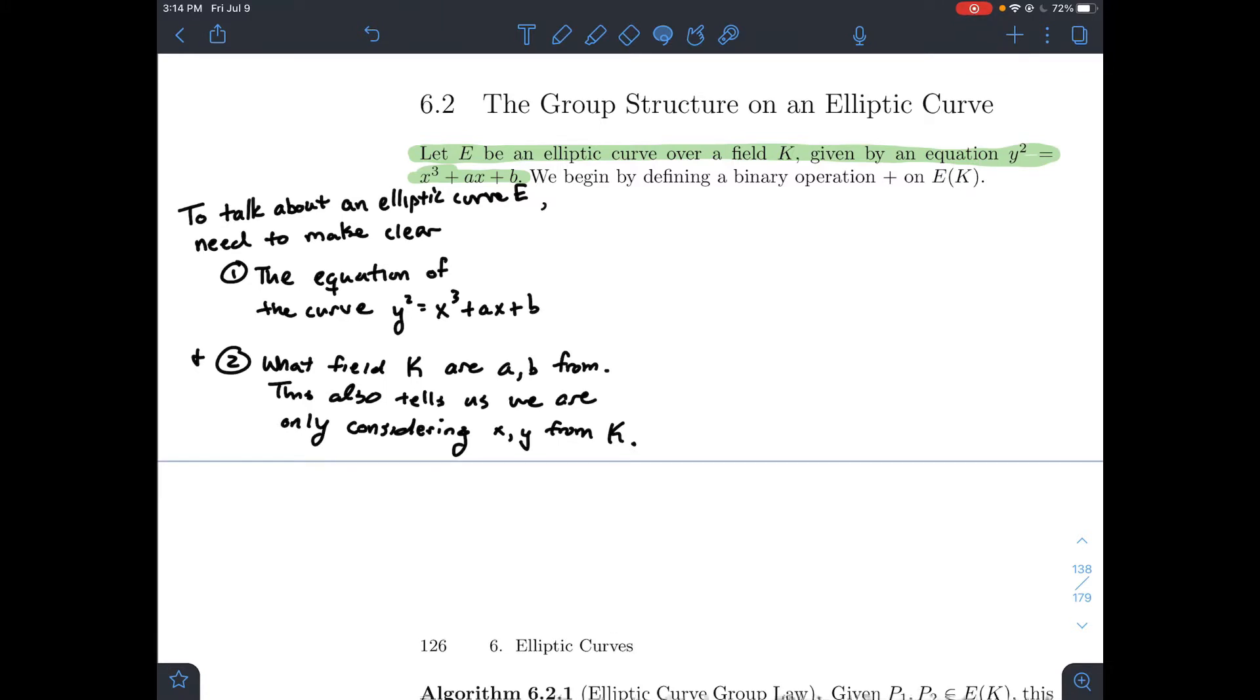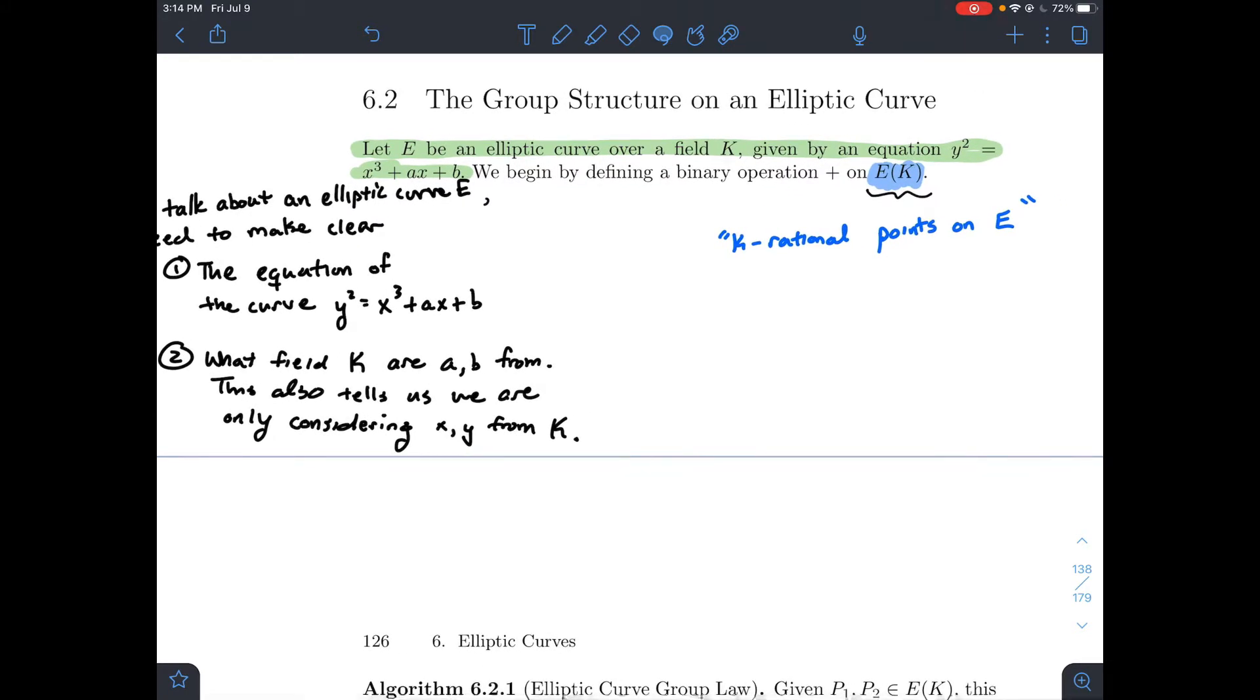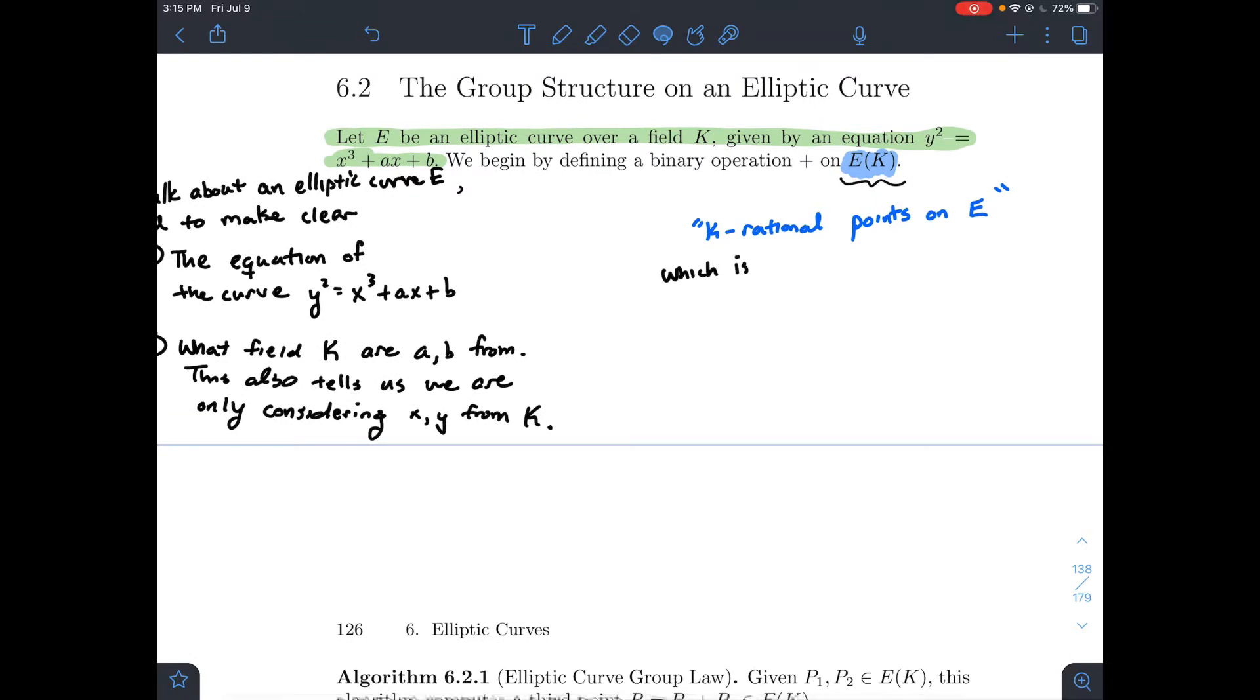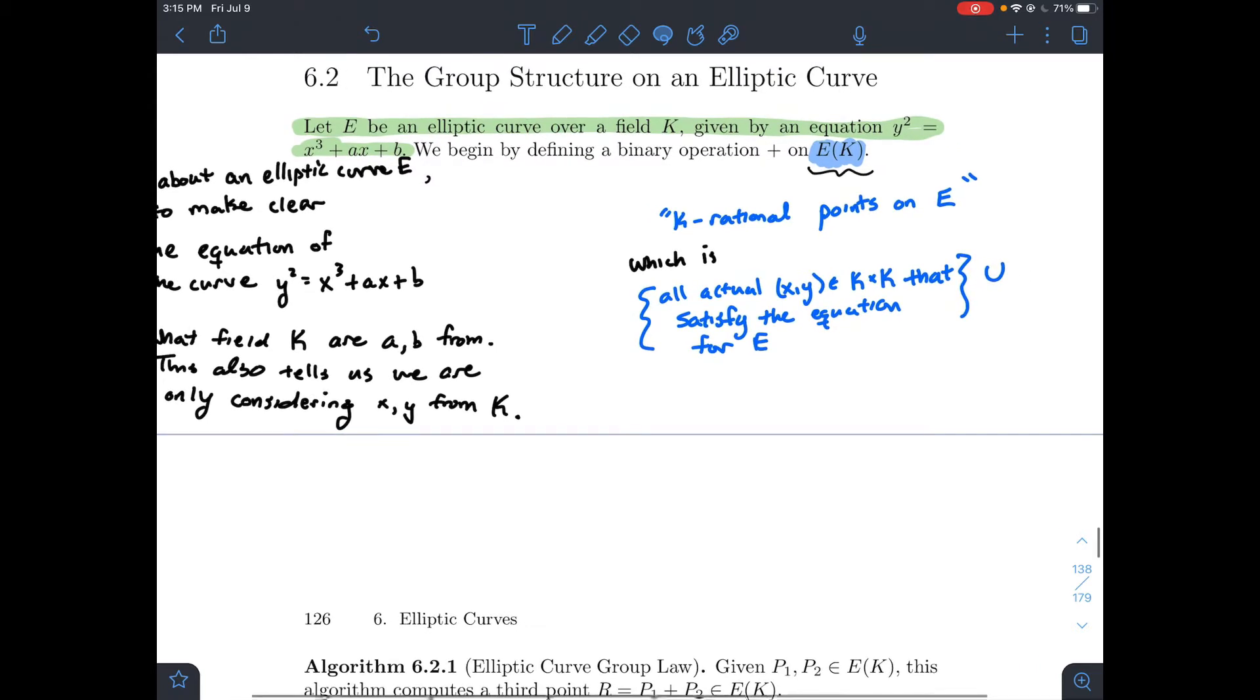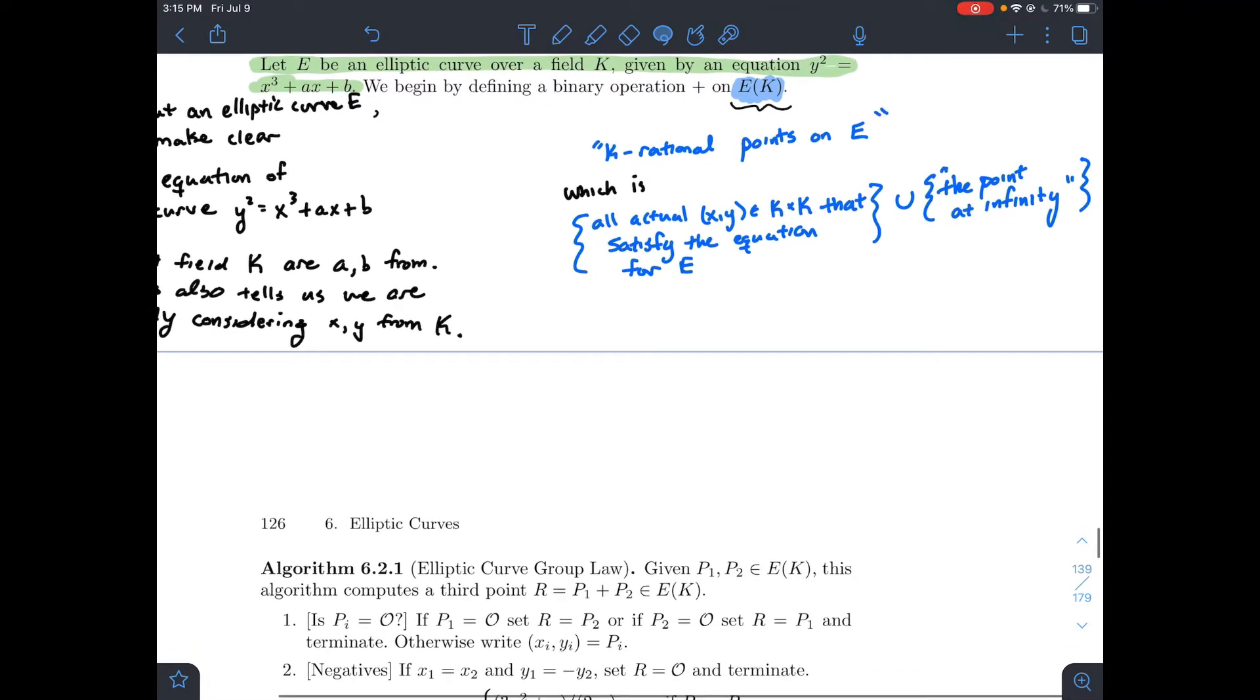Now there's one more piece, there's one more symbol over here that should be familiar from the previous video. E(K), that's talking about the elliptic curve with this equation y squared equals x cubed blah blah blah over the particular field K. That's the symbol that you use to impart 1 and 2 to somebody. But we'll call that the k-rational points on E. And what is that? Remember it's the union of two things. The first thing is just take all the coordinates x comma y from K cross K that satisfy the equation for E. And then the other thing we do is we throw in this weird point at infinity, which I showed you the symbol for in the previous video, but we really haven't said much about. And we'll say a little bit more about it right now, or going forward, I mean.